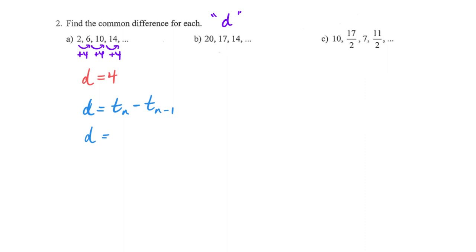To find D, I take any term — let's say term two, which is six — and I subtract the term that comes before it, term one, which was two. I can actually calculate what my D value is. If I go term four subtract term three: if the sequence is arithmetic, it doesn't matter which two consecutive terms I choose. If I subtract them in that order — the term minus the term that precedes it — I can calculate my D. I would hope most of us are just looking at the pattern and stating the answer.